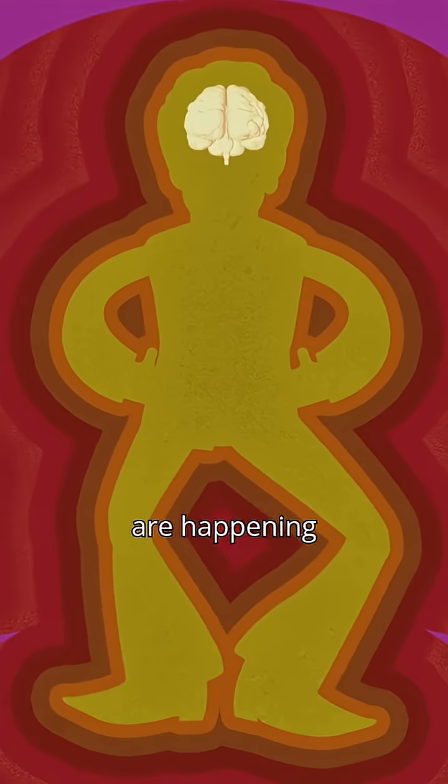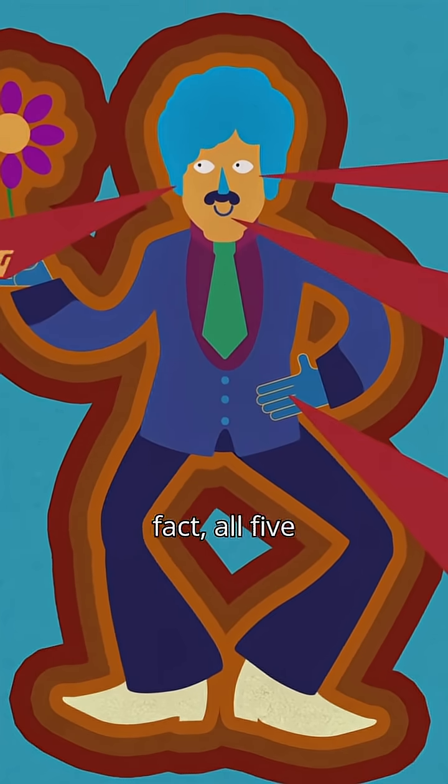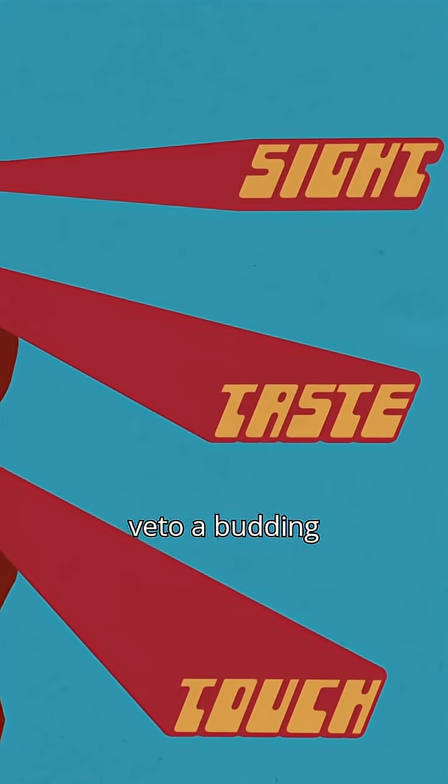But just because the calculations are happening in your brain doesn't mean those warm, fuzzy feelings are all in your head. In fact, all five of your senses play a role, each able to vote for or veto a budding attraction.